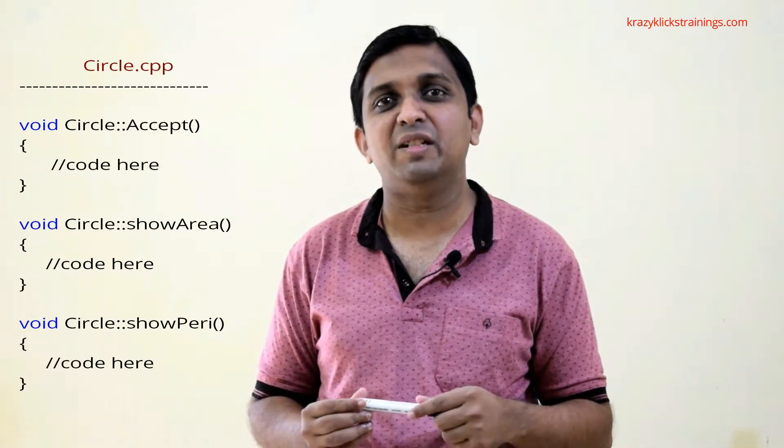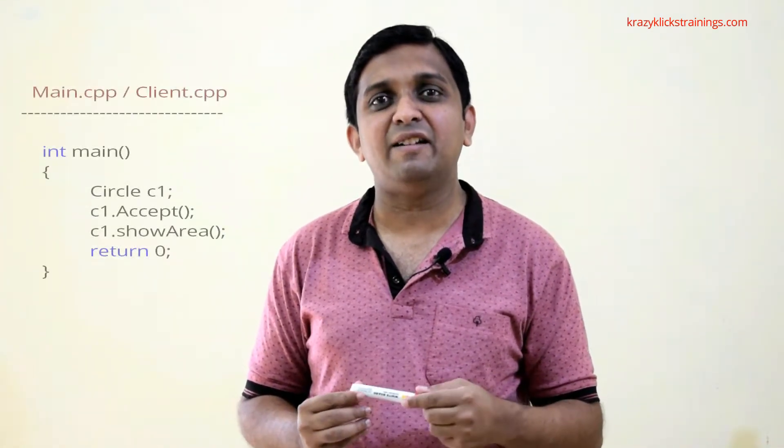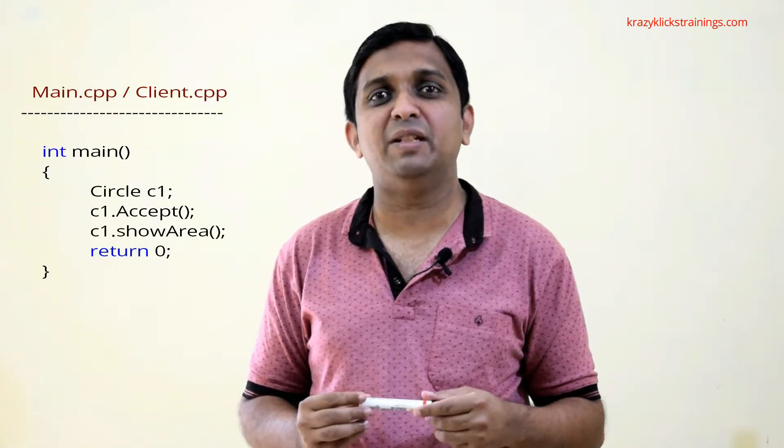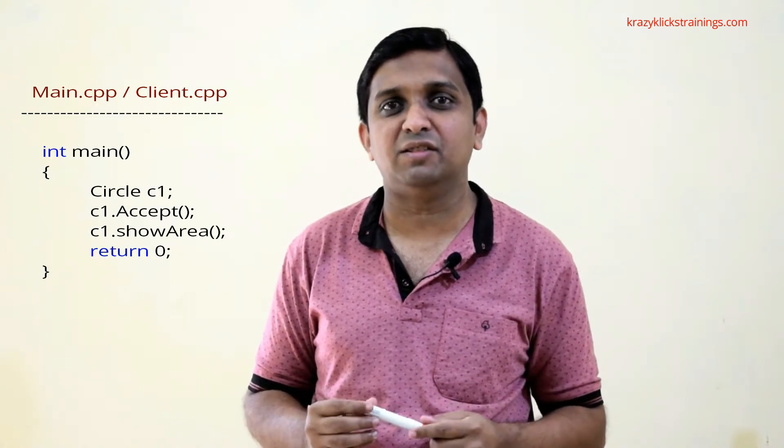For this project I will implement one more file, main.cpp or client.cpp, which will contain the client side code. From main.cpp I will be calling the functions of circle class. In general there are three files: one header file for class declaration, one source file for class definition, and one more source file to utilize the class.